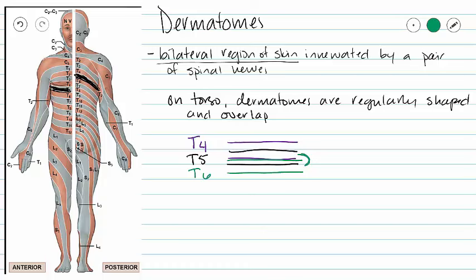If we have damage to spinal nerves on the torso, that damage is harder to locate because of the overlap. But on the flip side, if you have damage to a spinal nerve, you may retain some sensory function of that dermatome.